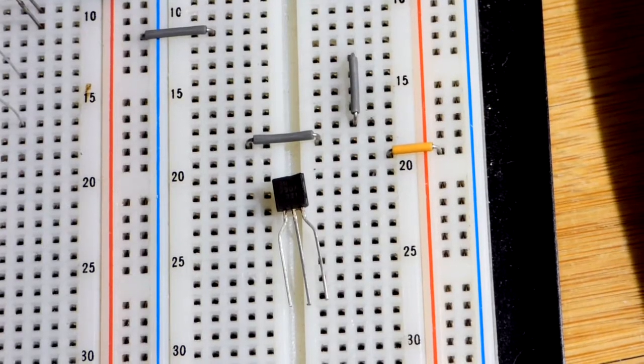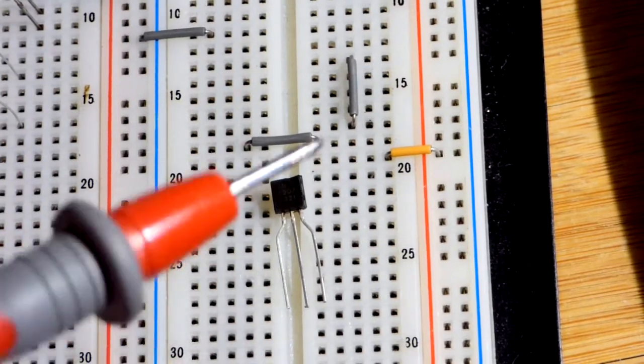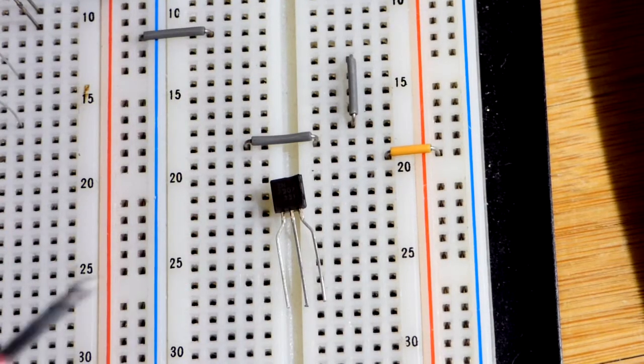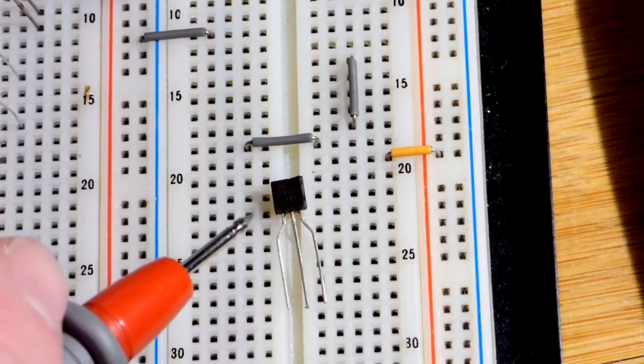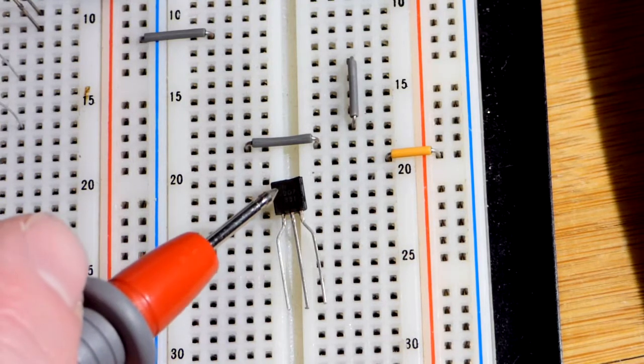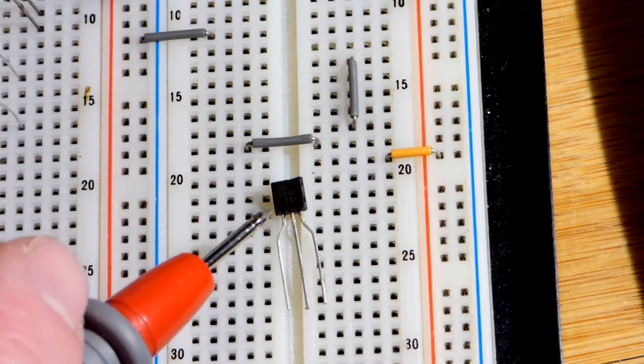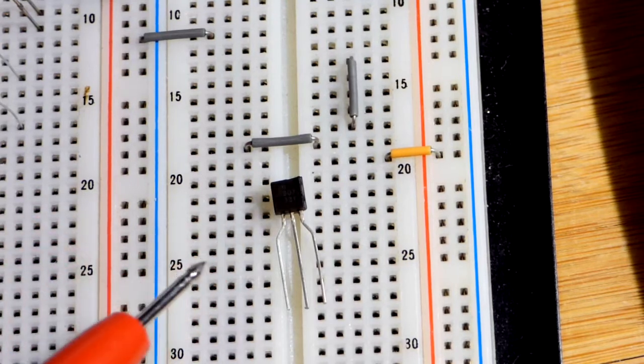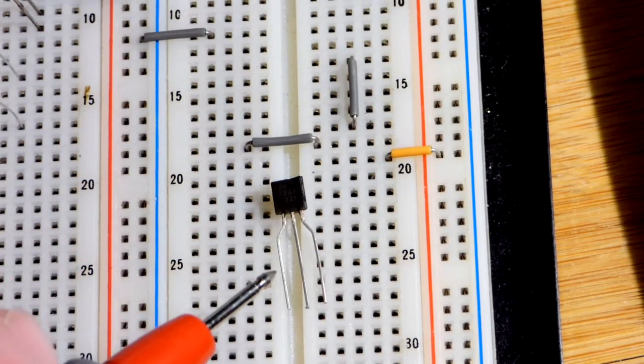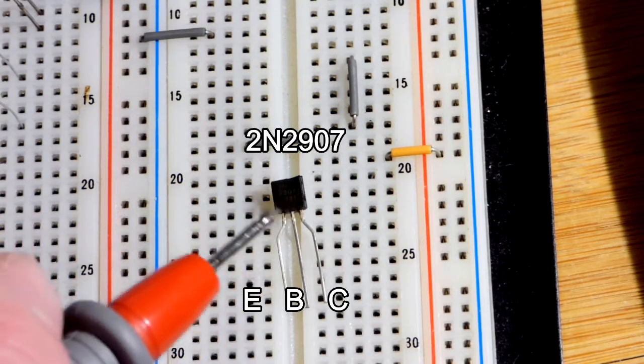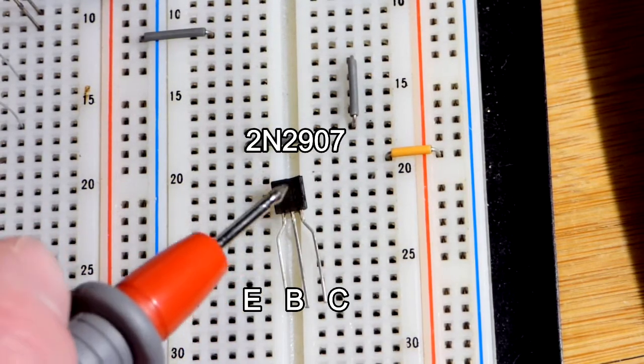So now in this video we're going to take a quick look at the PNP bipolar junction transistor. There's a large number of bipolar junction transistors. This is the 2N2907. I know you won't be able to see those letters and numbers, but that's what it is.